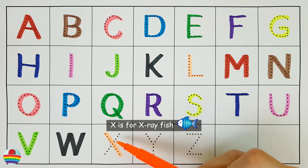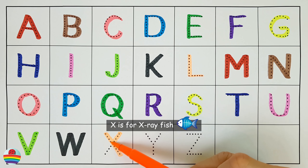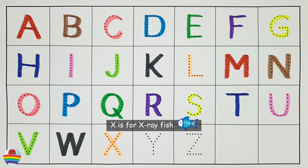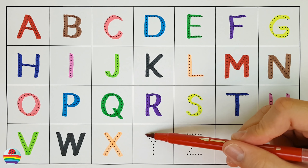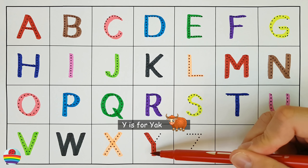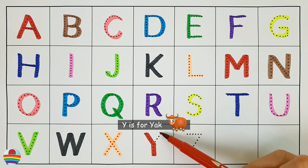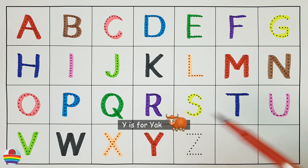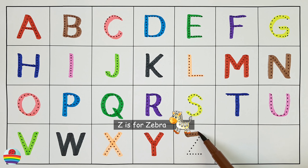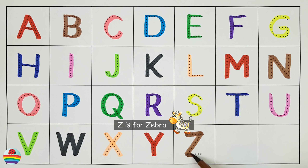X. X is for x-ray fish. X. Y. Y is for yak. Y. Z. Z is for zebra. Z.